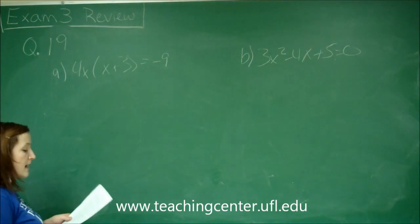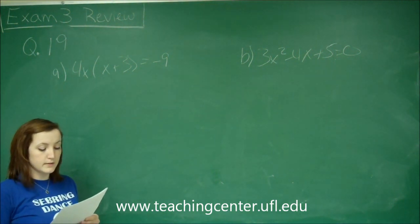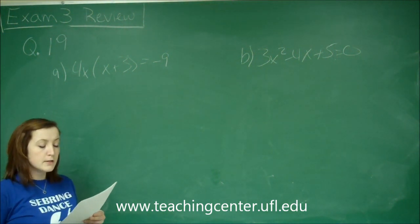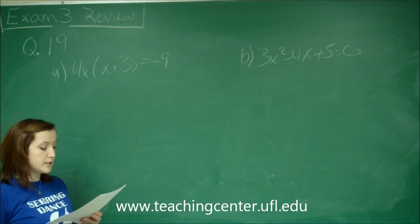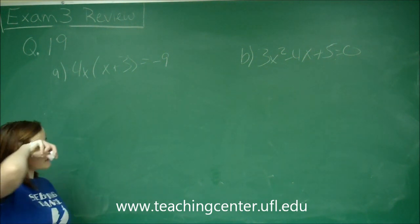This is question number 19 and it asks us to use the discriminant to determine the number and type of solutions to the following equations. We're going to solve each equation in the complex number system.